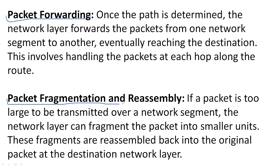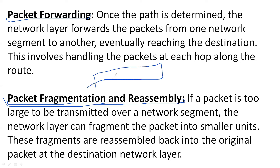What is the meaning of data fragmentation and reassembly? We already performed segmentation based on network capability at the transport layer. At layer three, the network layer will automatically add the layer three header to the segment received from the transport layer. But if the size of this segment is too large to be forwarded through the network, it will do fragmentation. It will also reassemble the data in the correct order — first, second, third, fourth — from source to destination.